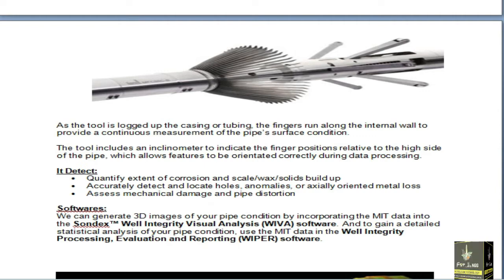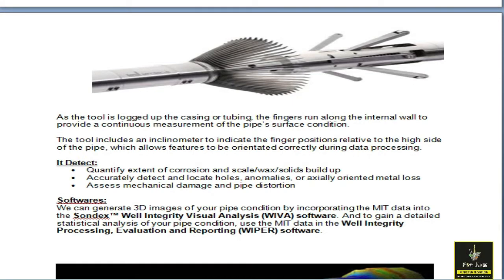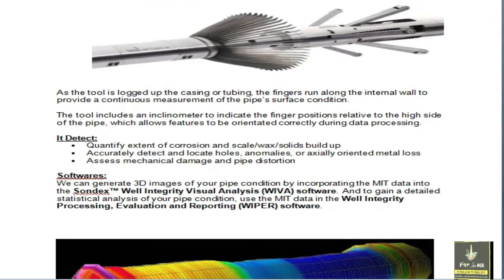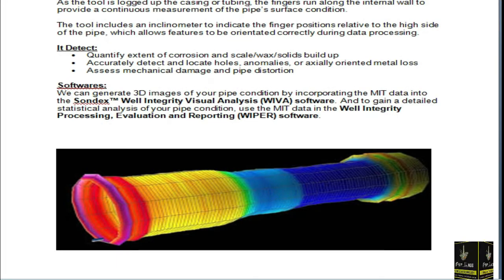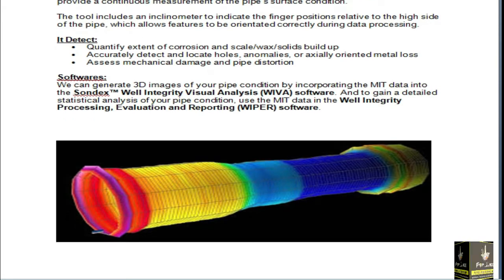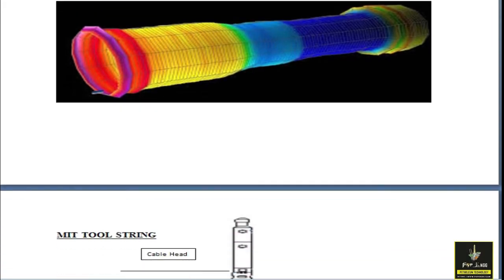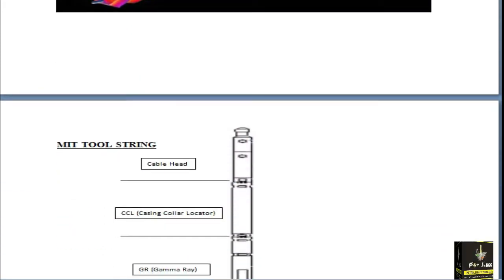The software used to provide 3D models for the MIT data includes VIVA — Well Integrity Visual Analysis — and WIPER software, which stands for Well Integrity Processing Evaluation and Reporting. These VIVA and WIPER softwares give us a 3D picture of the casing, which I will also explain in this video.